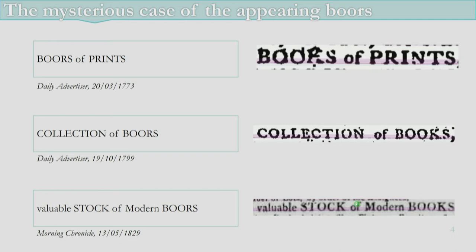With a word preview I found that 'boars' were actually 'books' being misread. We can see here: books of prints, collections of books, valuable stock of modern books. In the first instance I can see why this happened; the others are a bit more of a mystery. But this example shows that next to spelling variations, transcription variations can also have major implications for corpus analysis, both distant and close.